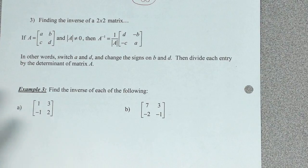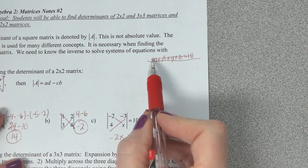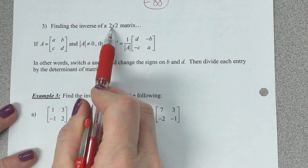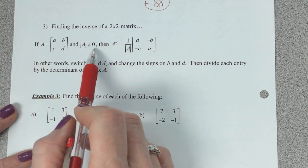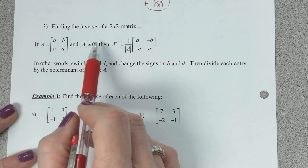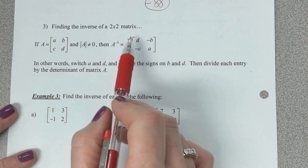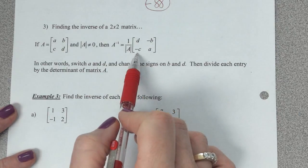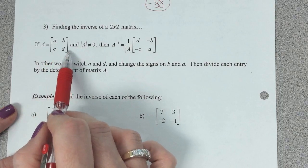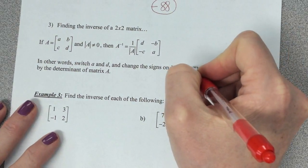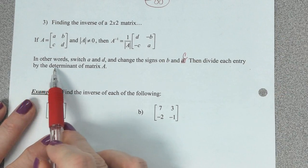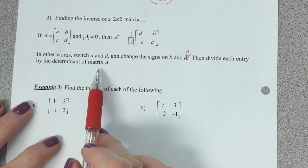Next, finding inverses. We need to be able to find an inverse because that allows us to solve complicated systems — four variables and four equations can be solved with inverses. To find a two-by-two inverse by hand: first find the determinant (A times D minus B times C). The determinant is not allowed to be zero. Then switch A and D, and change the signs on B and C. Finally, divide each entry by the determinant of matrix A.